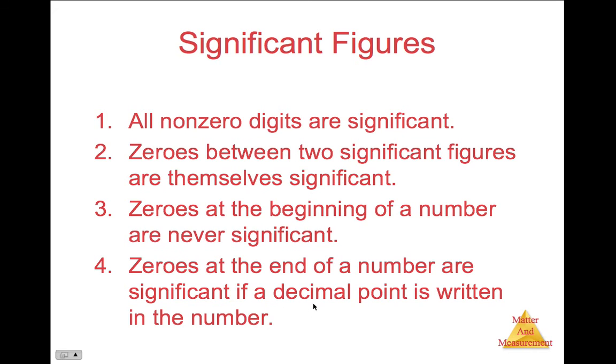So if you have a number that has a decimal point, if it has zeros at the end, they're always significant. Notice three of the four rules have something to do with zeros.